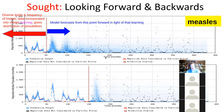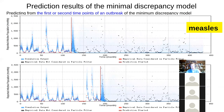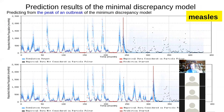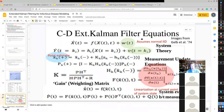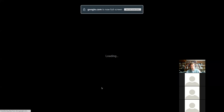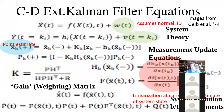The longer you go on without data, the more uncertain you're going to be. If you're out years from now for measles, you're going to be very uncertain. But the basic deal is that you are running this model forward as if there's no more data coming in — you just run it without that data going forward.